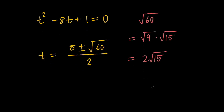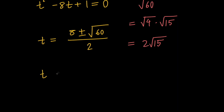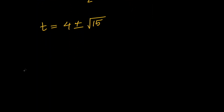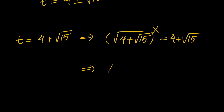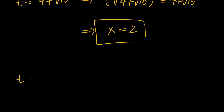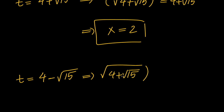So we can simplify and say t equals 4 plus or minus root 15. In the first case, if t equals 4 plus root 15, remember that t is the square root of (4 plus root 15) all to the power of x. From this, we can determine that x equals 2 in the first case.